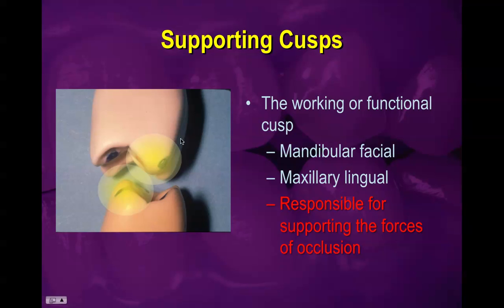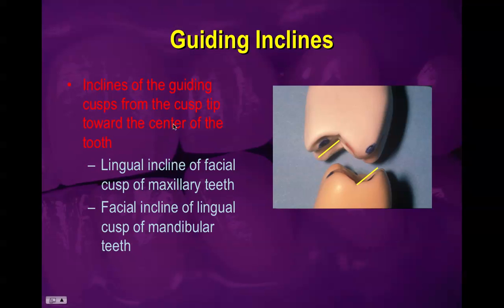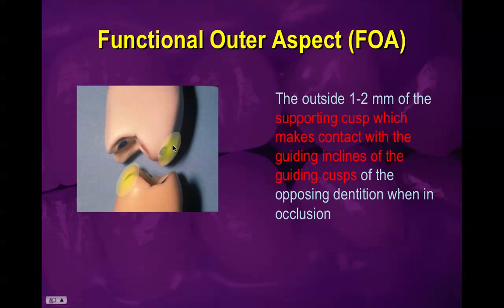To summarize: on maxillary teeth, lingual cusps are functional and supporting; on mandibular teeth, facial cusps are functional and supporting. Non-functioning cusps — also called guiding cusps — are the facial cusps of maxillary and the lingual cusps of mandibular. The inclines on non-functional cusps from cusp tip toward center are guiding inclines — you always have two of them — and they correlate with two FOAs on the functional cusps.